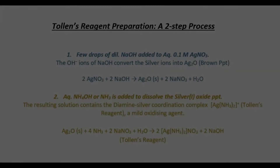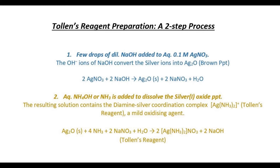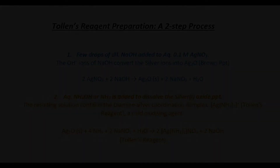Tollens reagent is prepared in a two-step process. First, a few drops of dilute sodium hydroxide are added to aqueous 0.1 molar silver nitrate. The hydroxide ions convert the silver aqua complex into silver oxide, which precipitates as a brown solid. In the second step, aqueous ammonia is added to dissolve the brown silver oxide precipitate, yielding the diamine silver coordination complex, which is a mild oxidizing agent and the main component of Tollens reagent.